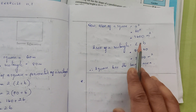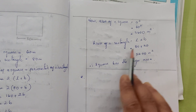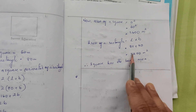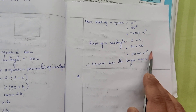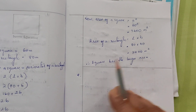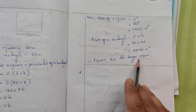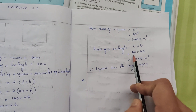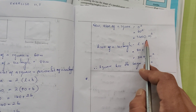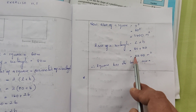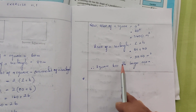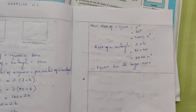Area of a rectangle = length × breadth = 80 × 40 = 3200 meter square. Therefore, the square has the larger area. Square area is 3600, rectangle area is 3200 — so the square has the larger area.